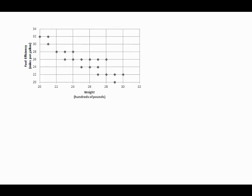The dots on the graph above indicate the weights and fuel efficiency ratings for 20 cars. How many of the cars weigh more than 2,500 pounds and also get more than 22 miles per gallon?